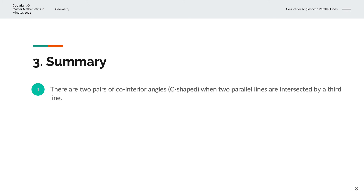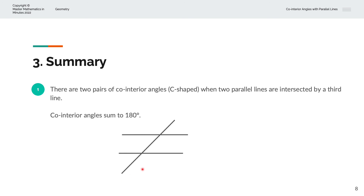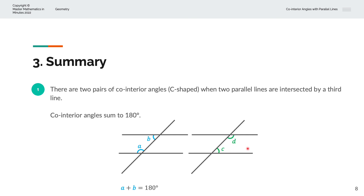To summarise, there are two pairs of co-interior angles when two parallel lines are intersected by a third line, and co-interior angles sum to 180 degrees. Visually, if we have angle A, the co-interior angle B satisfies A plus B equals 180 degrees. The second pair, C and D, also satisfies C plus D equals 180 degrees. Thank you very much for watching. This is Master Mathematics in Minutes.